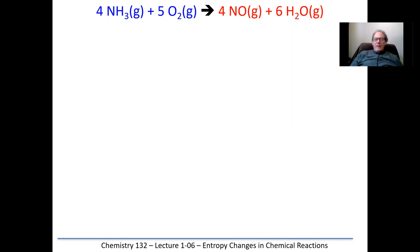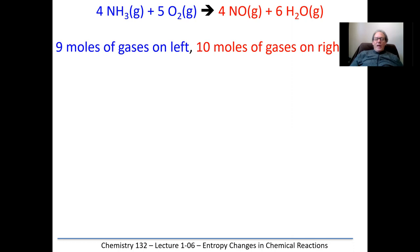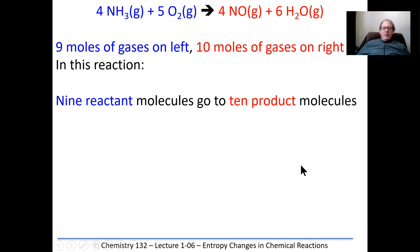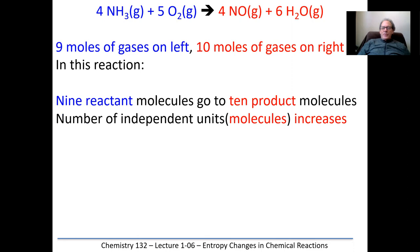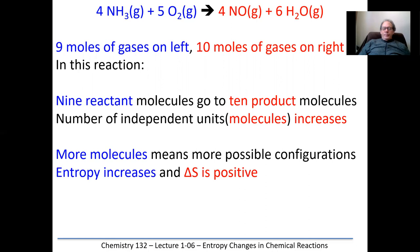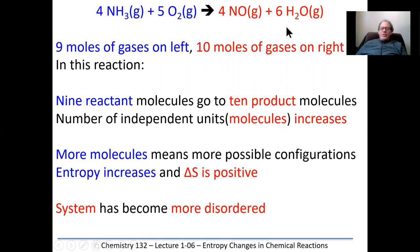Here's a second reaction. Again, all gases. We have nine moles of reactants on the left and ten moles of products on the right. When we compare nine on the left to ten product molecules on the right, it appears it's becoming more random — more possibilities of more random states. Entropy is increasing. In this case, delta S would be positive. The system has become more disordered because of that increase in randomness with greater probabilities of more configurations with more molecules.